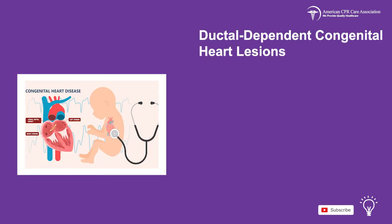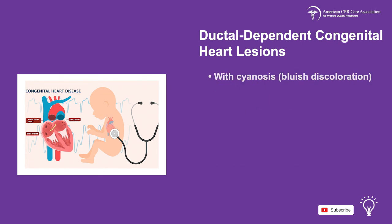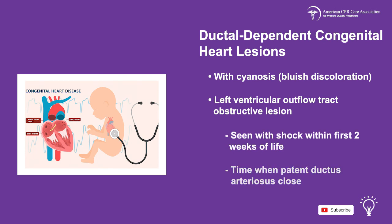The third type of obstructive shock is ductal-dependent congenital heart lesions. These are birth defects apparent within the first weeks of life and include ductal-dependent lesions for pulmonary blood flow and for systemic blood flow. The ductal lesions for pulmonary blood flow are seen without shock but with cyanosis, or a bluish discoloration, in children. The left ventricular outflow tract obstructive lesion appears with shock within the first two weeks of life, which is when the patent ductus arteriosus closes.